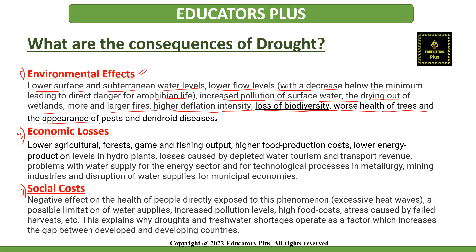Economic consequences include lower agricultural, forest, game, and fishing output; higher food production costs; low energy production levels in hydro plants; losses caused by depleted water tourism and transport revenue; problems with water supply for the energy sector and for technological processes in metallurgy and mining industries; and disruption of water supplies for municipal economies.